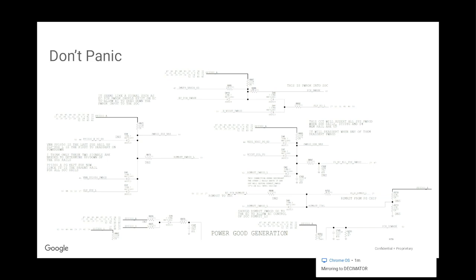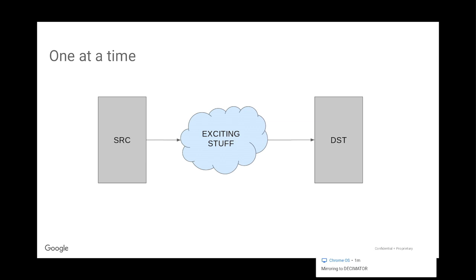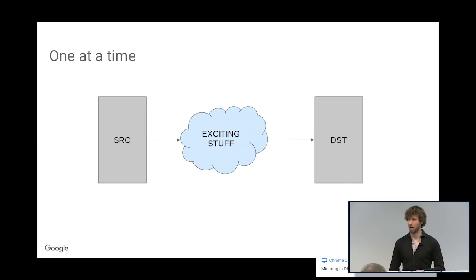When you first look at a schematic, it's pretty scary. But actually, we're not designing rockets here, we're just making Chromebooks. There's no science here, and you can break down the problem into little parts. You have a source, a lot of exciting stuff, and then the destination. You don't have to look at 50 pages all at once, you just have to look at one wire at a time.